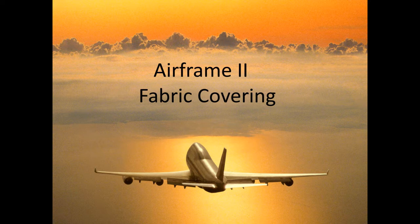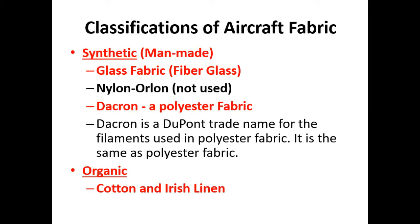If you're following along in the slideshow, we're looking at classifications of aircraft fabric. Our two main classifications are synthetic or man-made, and organic. For synthetic fabric we're looking at glass fabric — fiberglass — and Dacron, which is a polyester fabric. Those are our two big synthetics. Dacron is a DuPont trade name for filaments used in polyester.